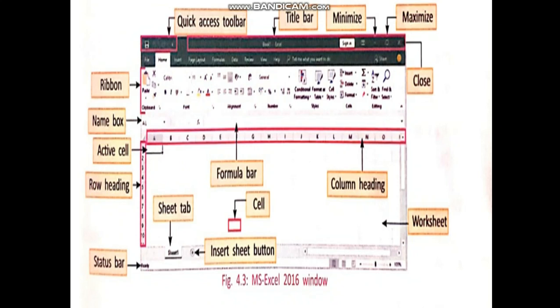The first one is the title bar. This bar is present at the top of the window and it shows the current Excel file name which you are working on. Here are three buttons given: one is the minimize button, another is the maximize button, and the next is the close button. The minimize button is used to hide the MS Excel window from the screen. The maximize button is used to enlarge the MS Excel window. The close button will close the MS Excel window.